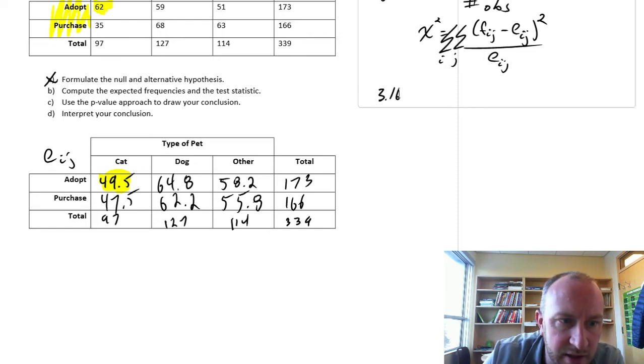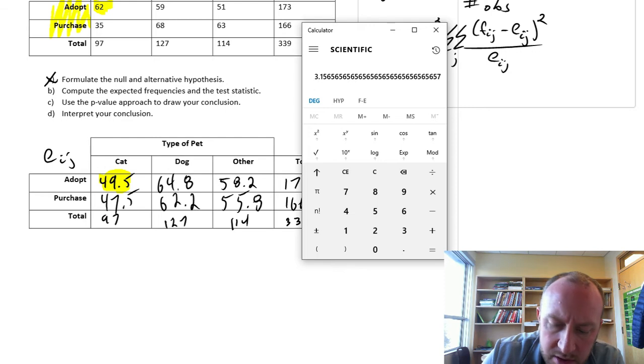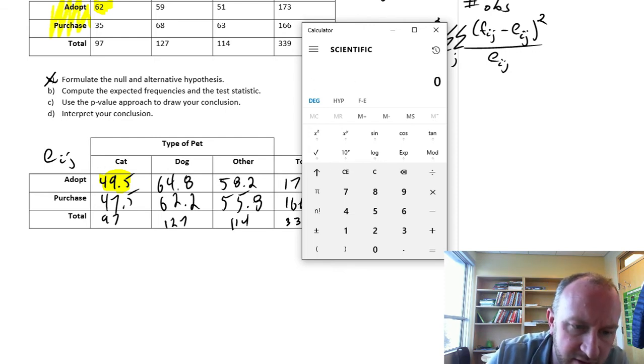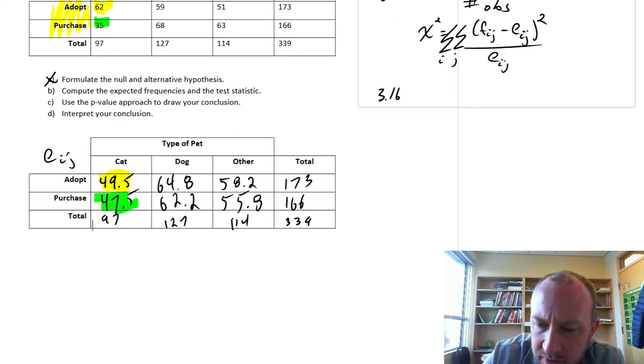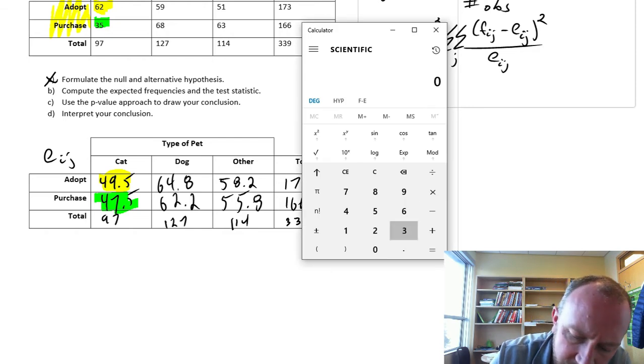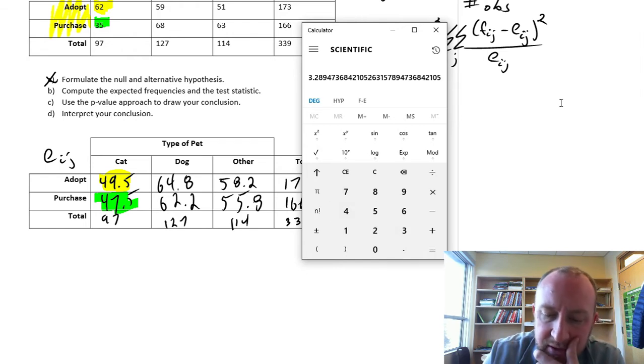The next one, let's do cats purchased. So that's going to be 35 and 47.5. So 35 minus our expected value, 47.5, squared, divided by 47.5, so 3 point 29.